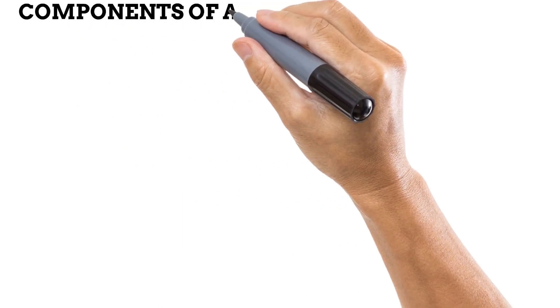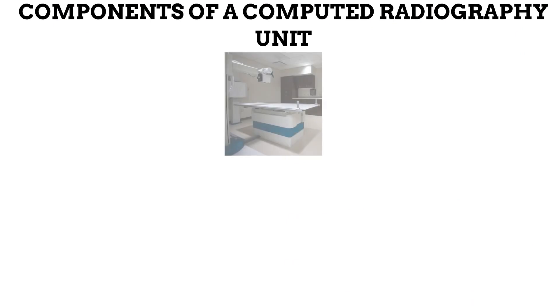What are the components of a computed radiography unit? In terms of radiation production and patient positioning, the equipment in a computed radiography unit do not differ from those in the conventional film screen radiography unit. This means that a computed radiography unit still uses the same x-ray tube, erect bucky, and radiographic table used in conventional film screen radiography. Later in this video, you'll learn how this serves as an advantage for computed radiography.